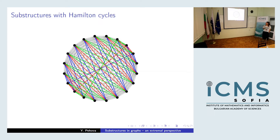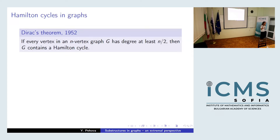Here is a minimal set of things one should know about degree conditions forcing the existence of Hamilton cycles. The first — roughly the third theorem in an undergraduate graph theory course — is due to Dirac, which showed that in an n-vertex graph, if every vertex has degree at least n/2, then it has a Hamilton cycle. This is for the existence of a single one.